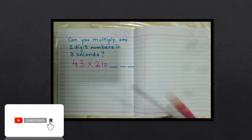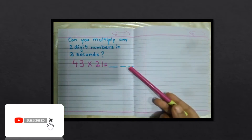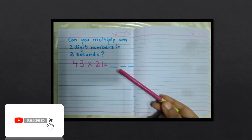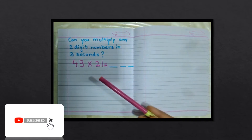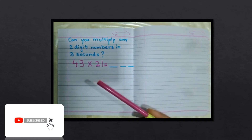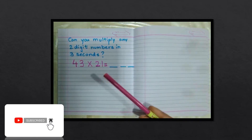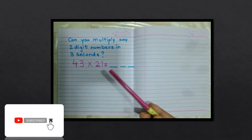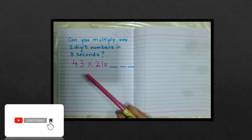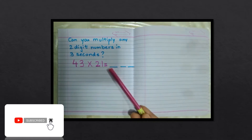Can you multiply any two-digit numbers in three seconds? I am going to teach you how to multiply two-digit numbers in three seconds. The number is 43 multiplied by 21.